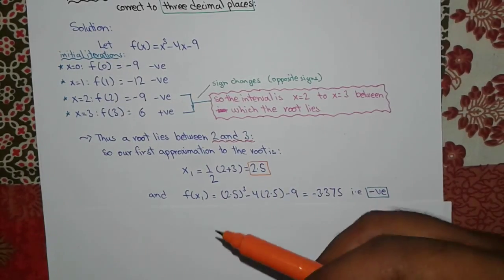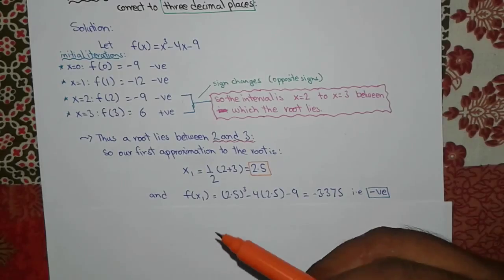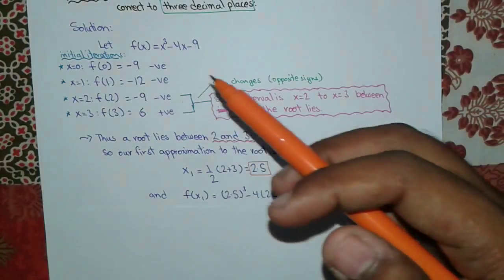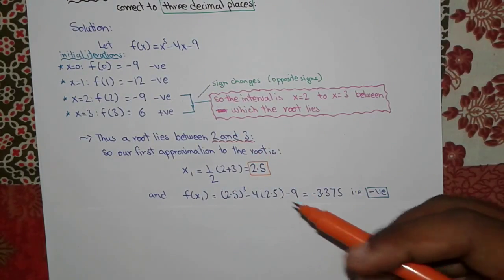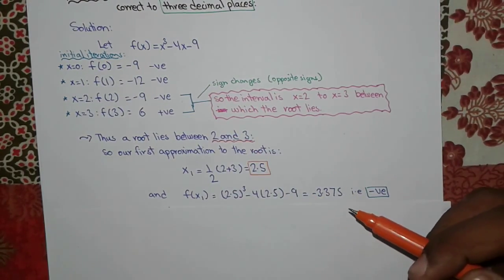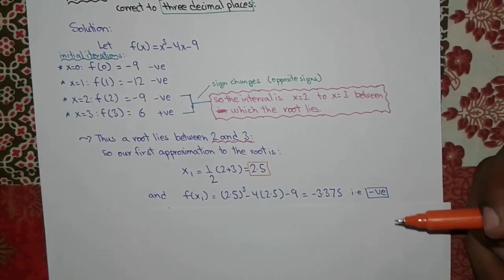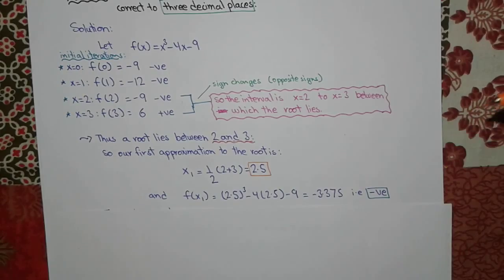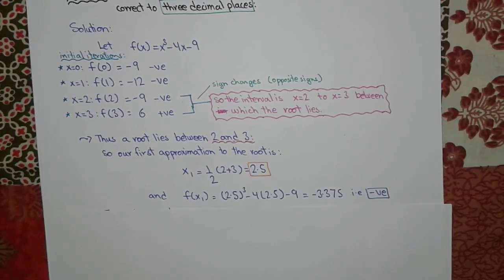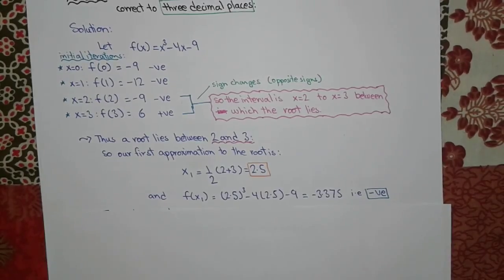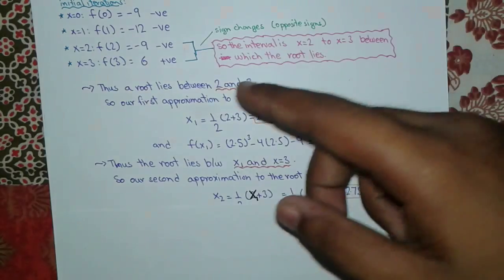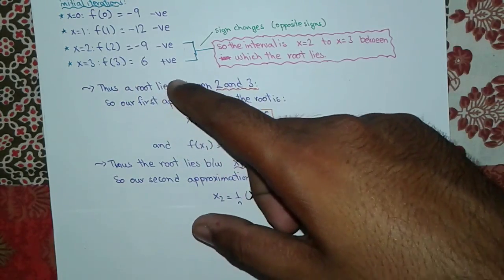We now check the value of f(x₁) by substituting x₁ into the equation, and we find it is -3.375, which is negative. The root will lie in an interval where f(x) has the opposite sign. Since f(x₁) is negative and f(3) is positive, the root must lie between x₁ = 2.5 and x = 3.